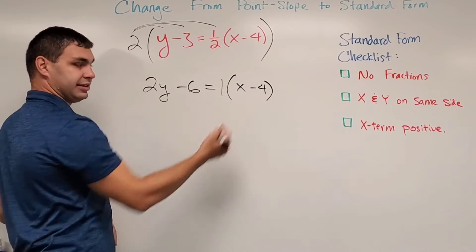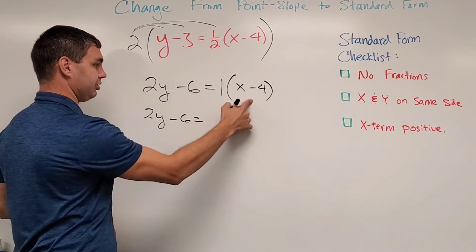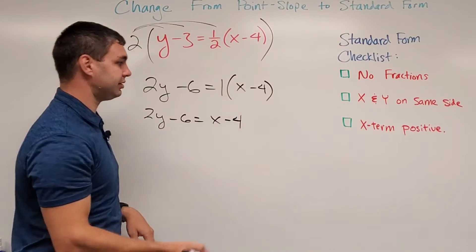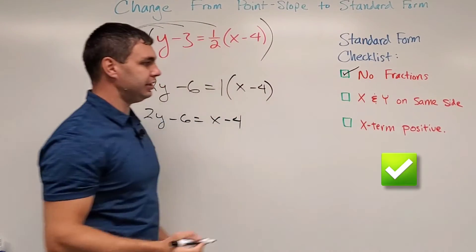1 times anything of course is that thing, so this is just 2y minus 6 equals the inside x minus 4. And since I got rid of my fractions, I can now check out my first box and say there are no fractions.